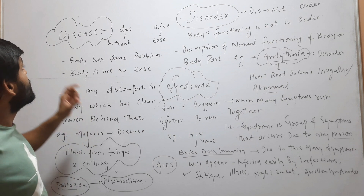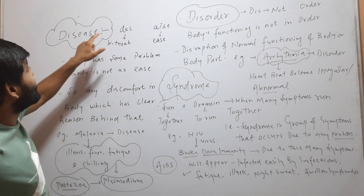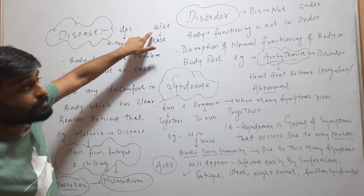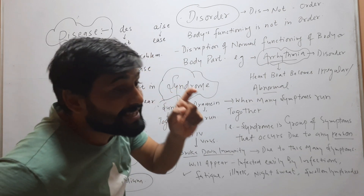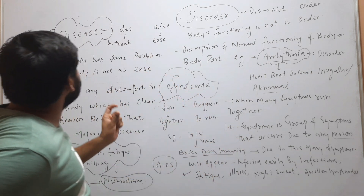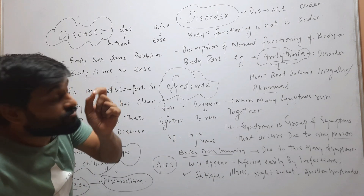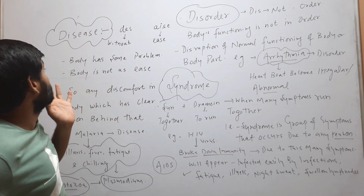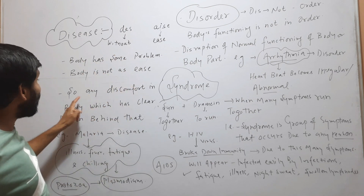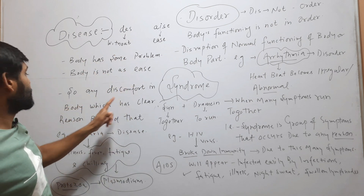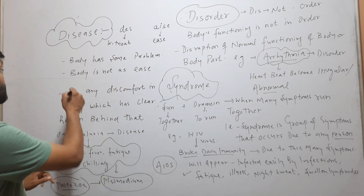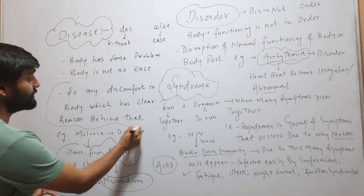What is disease? What is the meaning of the word disease? Disease is 'dis-ease' — 'dis' means without, 'ease' means comfort. So when the body is not at ease, when the body is not at comfort, that means the body has some problem. So any discomfort in the body which has a clear reason behind it — that is the definition of disease.